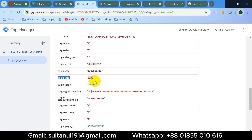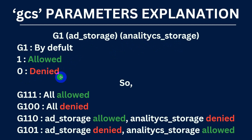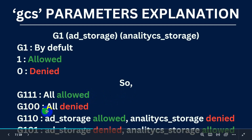This value may differ according to the user's cookie consent — it may be g111, g101, g110, etc. Here, 'g1' is by default. The next digit indicates ad storage cookie consent, and the next digit indicates analytics storage cookie consent. '1' means consent granted and '0' means consent denied. So 'g111' means all cookie consents are allowed, and 'g100' means all cookie consents are denied.